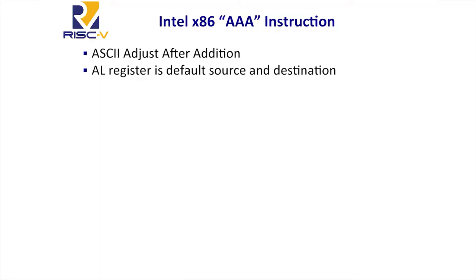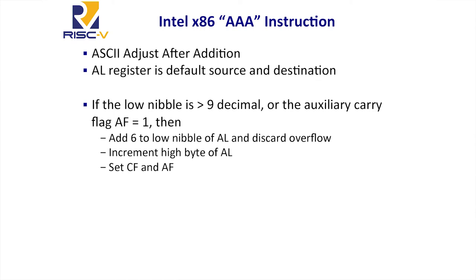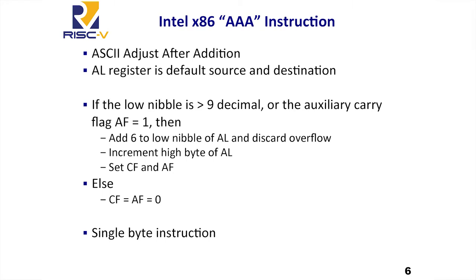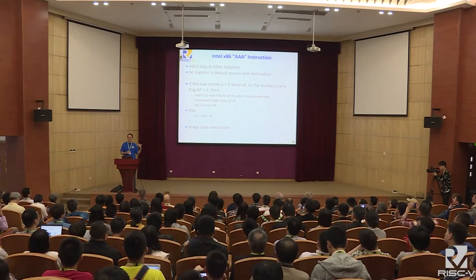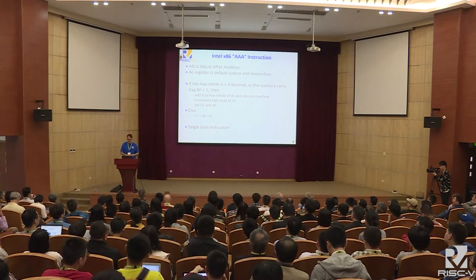This is part of a modern x86 processor. What does this instruction do? The one register is implicitly the source and destination. The semantics: if the low nibble is greater than 9 or the auxiliary flag is set, then add 6 to the low nibble, discard the overflow, increment the high byte, and set the carry flag and auxiliary flag — or else clear the carry flags. It's a crazy complicated instruction that does something very specific. And it's encoded in a single byte — very precious encoding space in the x86 ISA. This strange instruction takes one byte. This has no business being there — that's why I'm saying commercial designs don't make any sense. They're not very good, but over time they become the standard.